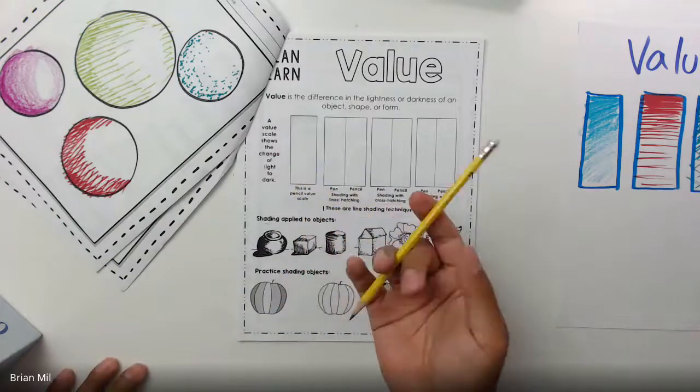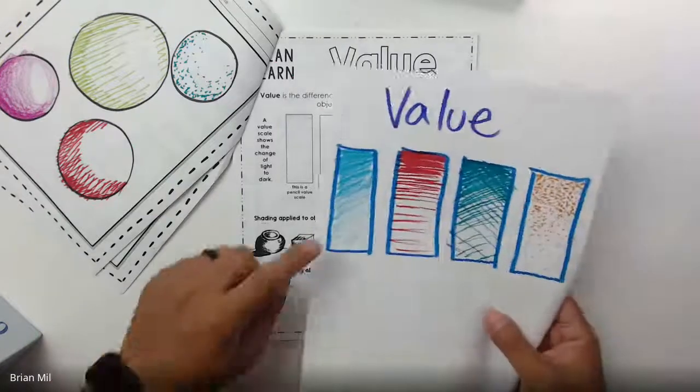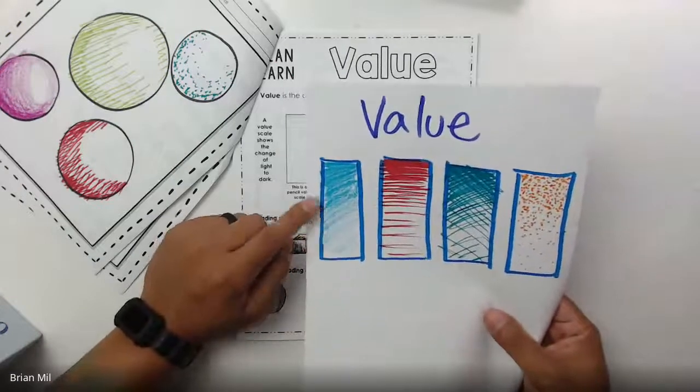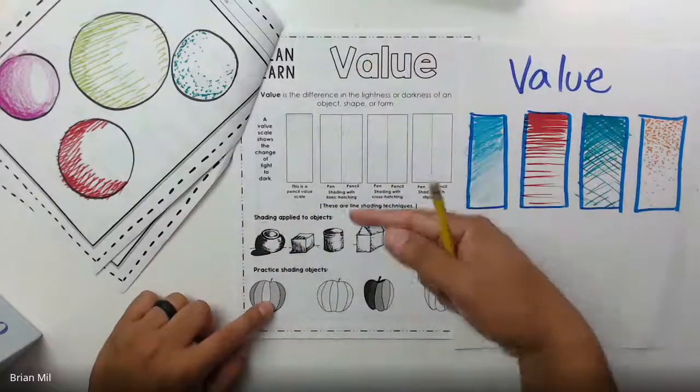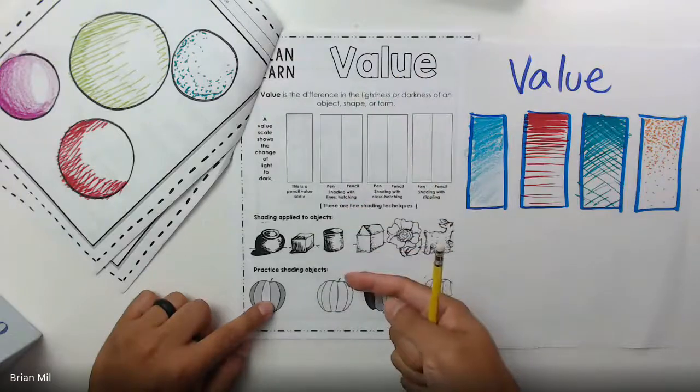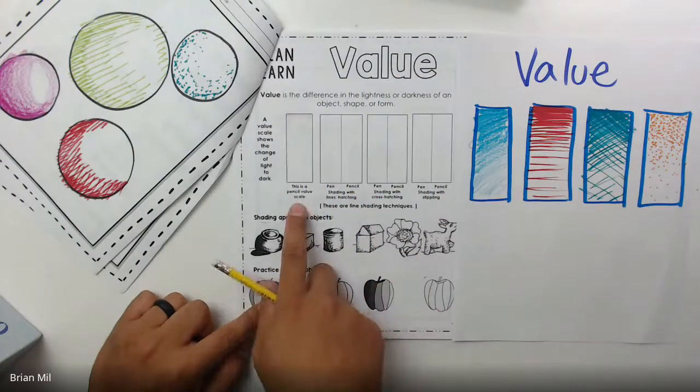You're going to need something to write with. So if you have a pen, great. If you have a pencil, great too, or crayon, which I did over here for this first one. That's fine too. So all you're going to do, I want you guys to work from dark to light. So going from the top, which is the dark, and light as we go down.